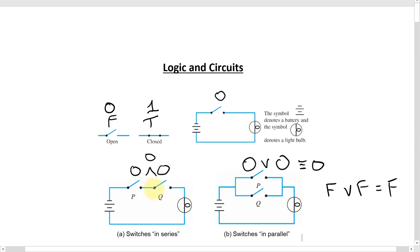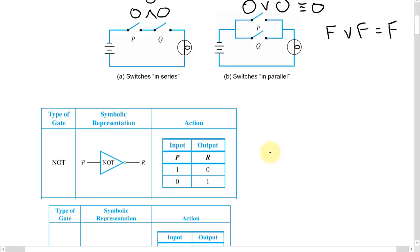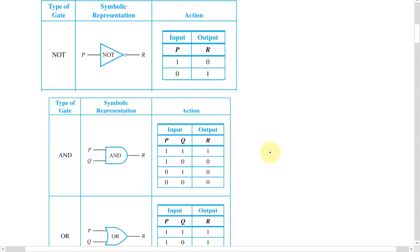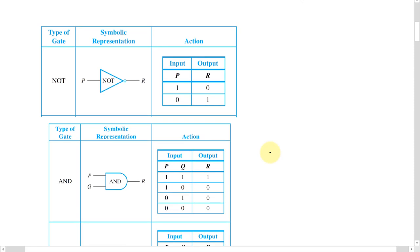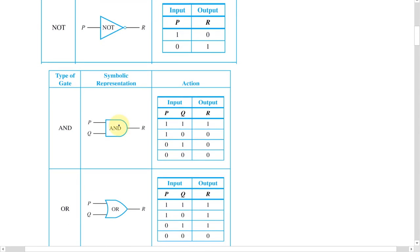The only way to pass through the AND gate is if both P and Q were true, or both ones. But with the OR gate, if either one of them or both of them was a one, then electricity could pass through. So we can look at basic operations in logic — negation, AND, and OR — and build logic gates with those logic operators.